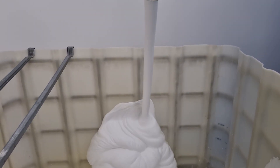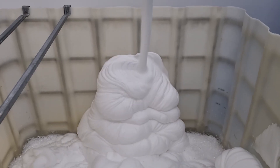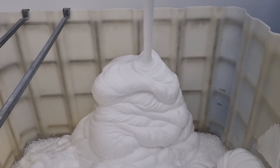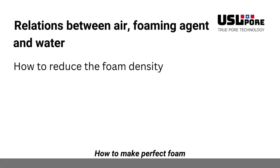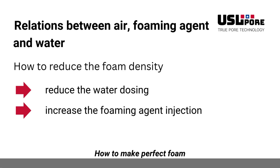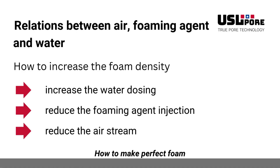Regarding the relationship between water, foaming agent, and air: by changing the ratio between these three components, you can adjust the foam density. Lower water injection reduces foam density; higher foaming agent injection reduces foam density, resulting in drier foam; and more air also reduces foam density. To reduce foam density, you can reduce water flow, increase foaming agent injection, or increase air stream. To increase foam density, increase water flow, reduce foaming agent injection, or reduce airflow.